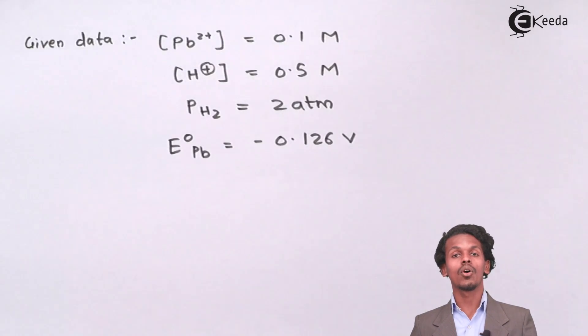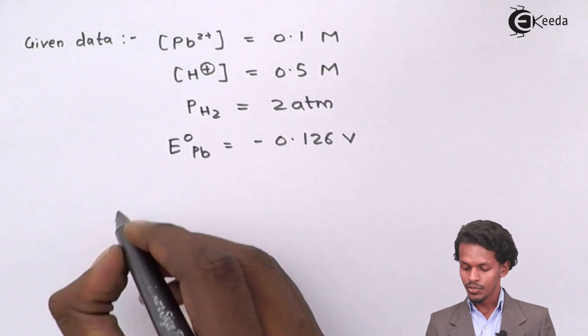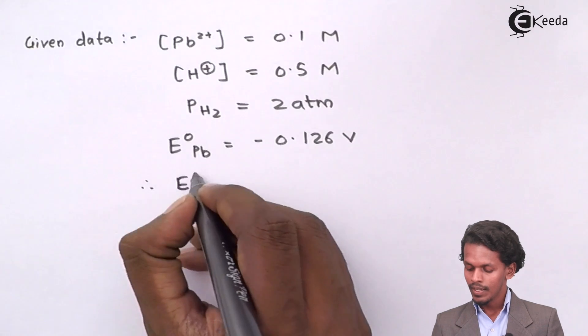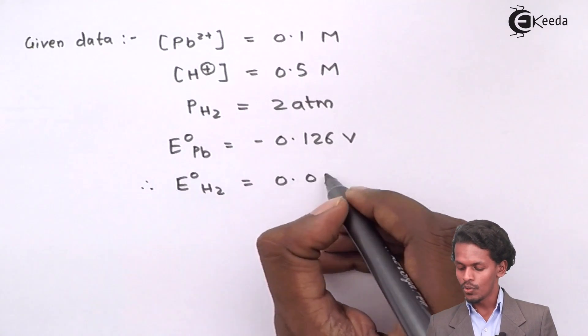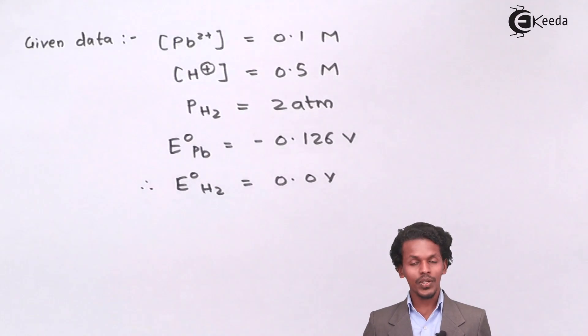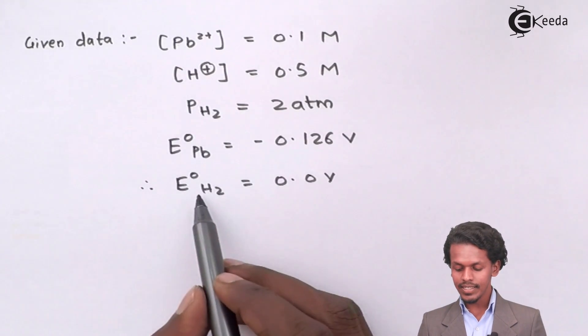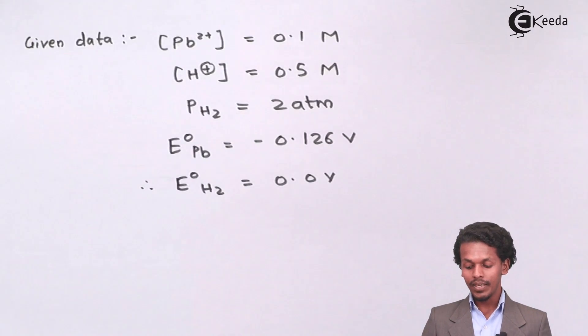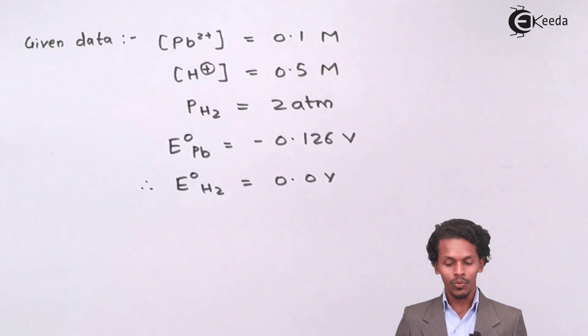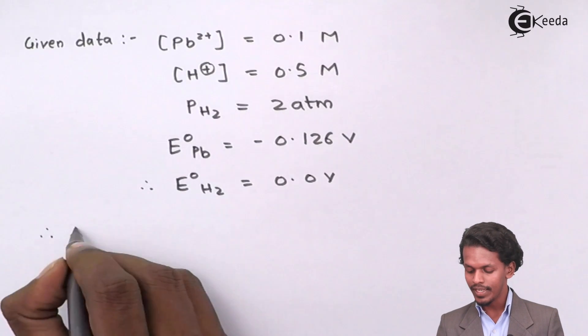We know that the cell potential of hydrogen is always 0.0 volts. Therefore, standard cell potential of hydrogen is 0.0 volts. Because of this, we could clearly indicate that hydrogen would be acting like a cathode while Pb will be acting like an anode.